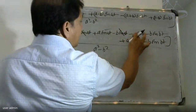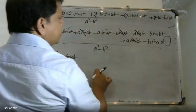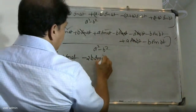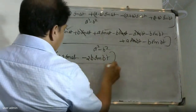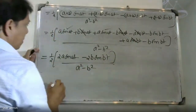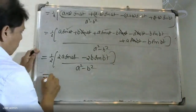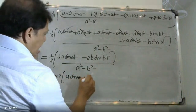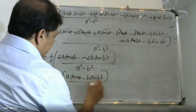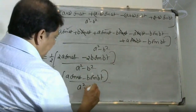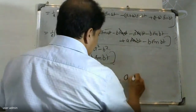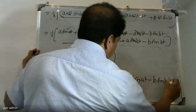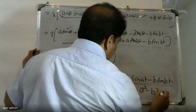Combining terms: A·sin(bt) minus B·sin(bt), divided by (a² − b²). The result simplifies to [a·sin(bt) − b·sin(at)] divided by (a² − b²).